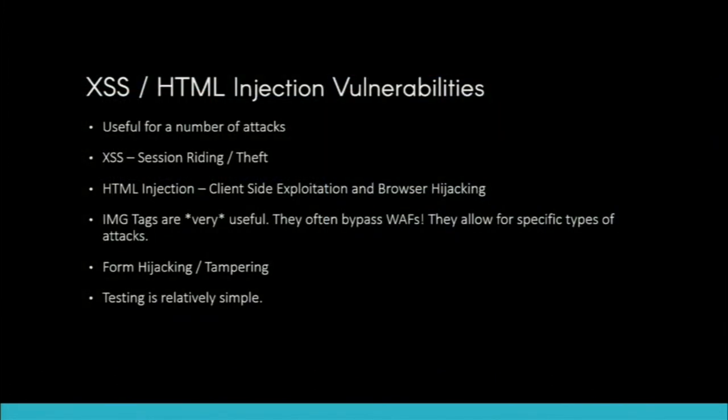Let's talk about cross-site scripting and HTML injection vulnerabilities. They're useful for a lot of attacks, particularly cross-site scripting — which enables session hijacking and theft — and HTML injection, which allows client-side exploitation and browser hijacking. Image tags are really useful for a number of things, including bypassing web application firewalls, browser-side attacks, and form hijacking and tampering. It's a really powerful vector.